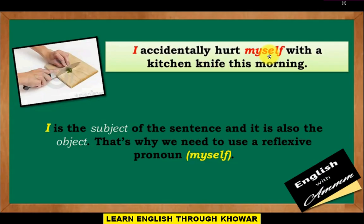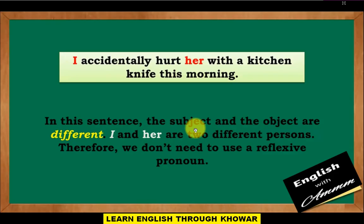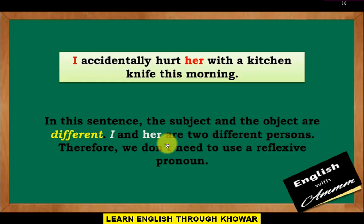Next sentence: 'I accidentally hurt her with a kitchen knife this morning.' In this sentence, the subject and the object are different — 'I' and 'her' are two different persons — therefore we don't need to use a reflexive pronoun.